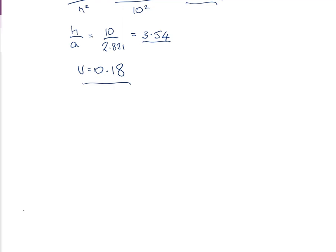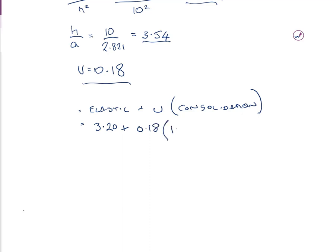Settlement at 2 years = elastic settlement + U × consolidation settlement = 3.20 + 0.18 × 1.57 = 3.48 millimeters. This consists of 3.2 mm of elastic settlement plus 18% of the 1.57 mm consolidation settlement. That is the answer to the second part of question 2.